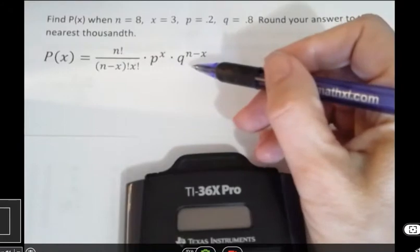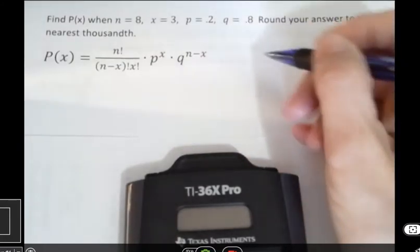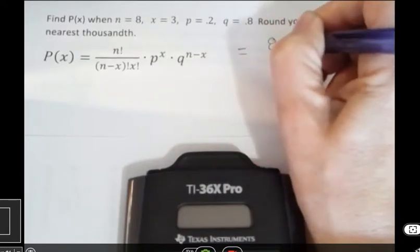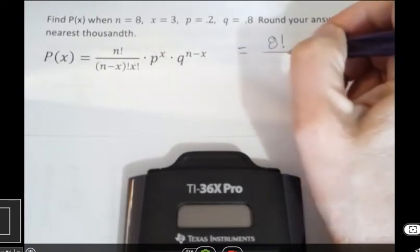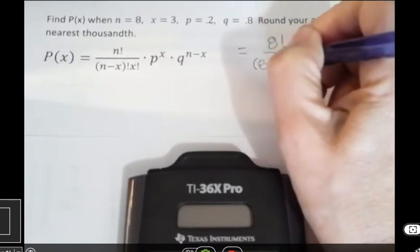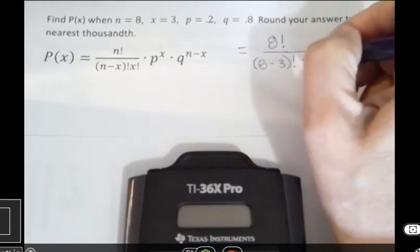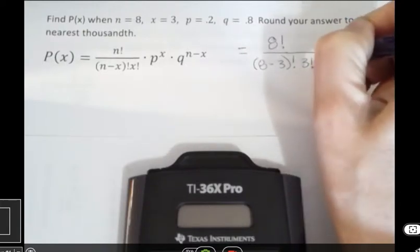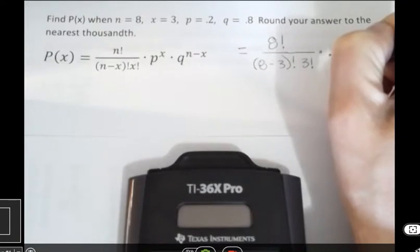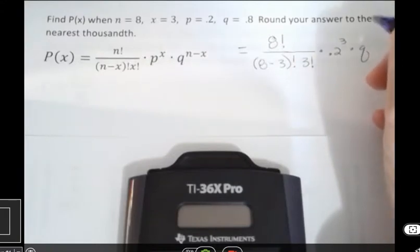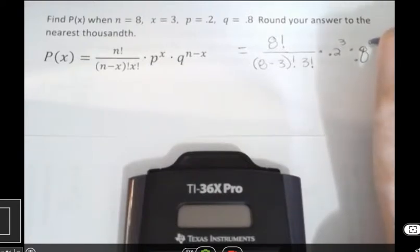So then we want to plug into this formula and simplify. You might find it easier if you plug in first and then put it into your calculator. What does an exclamation point mean? That's a factorial and you'll use that when you're in statistics. So I wanted you to get used to seeing some of the notation. Then x is 3, then we have 0.2 to the third power, and q is 0.8 to the n minus x, which is 8 minus 3.